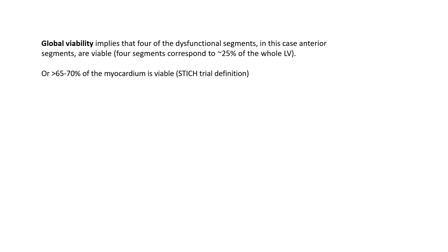Those four testing modalities can define segmental regional viability of each coronary territory, but they can also define global viability, which is more difficult to define. Global viability has been defined variably depending on the trials. One common definition is having four dysfunctional segments that are viable — corresponding to 25 percent of the LV in a 17-segment model. Alternatively, global viability can be defined as viability of over 65 to 70 percent of the whole myocardium including functional and dysfunctional segments, which is what was used in the STITCH trial.